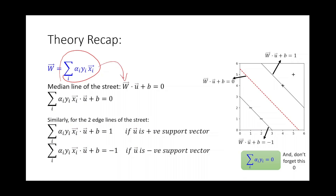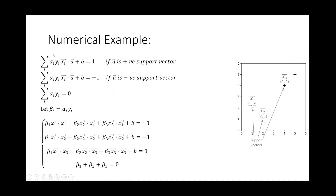Substituting w into the hyperplane gives the summation of (alpha_i yi xi) dot u plus b equals zero. For the two edge lines of the street, we have: for a positive support vector u, the expression equals one; for a negative support vector, it equals minus one. Also, don't forget the constraint that the summation of alpha_i yi equals zero — this is always true based on our derivation.